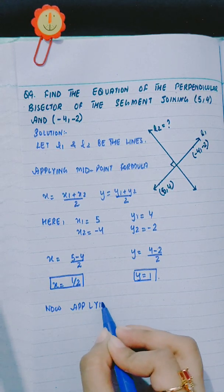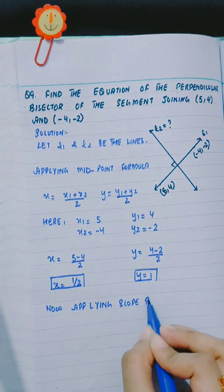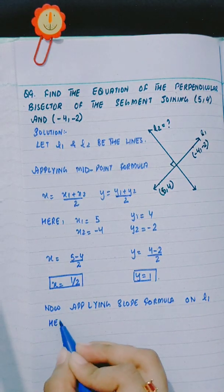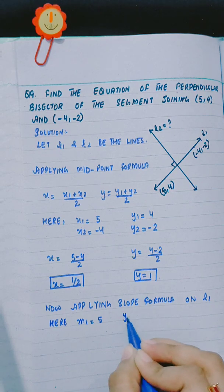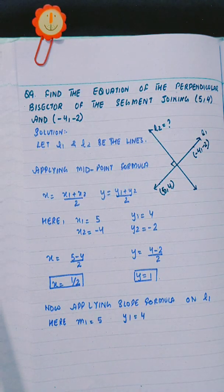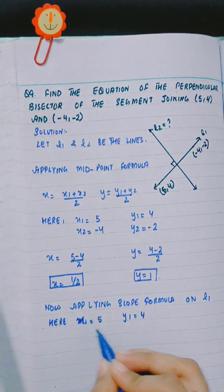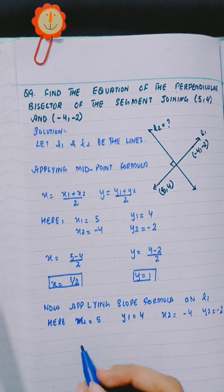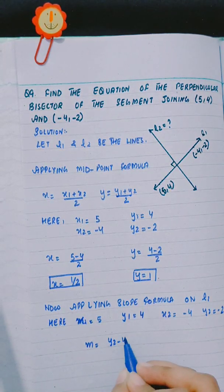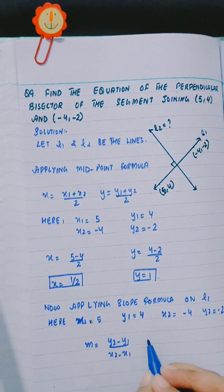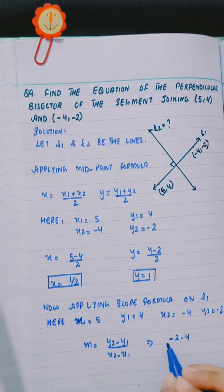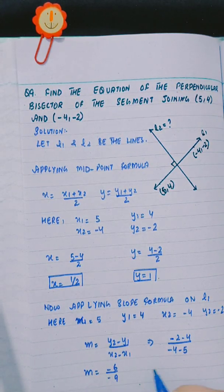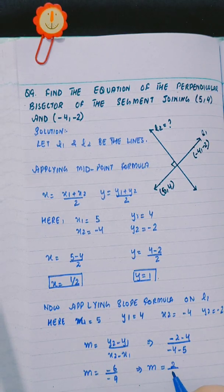Now, applying the slope formula on L1. Here X1 is equal to 5, Y1 is equal to 4, X2 is minus 4, and Y2 is minus 2. So M1 is equal to Y2 minus Y1 divided by X2 minus X1, which is minus 2 minus 4 divided by minus 4 minus 5, giving minus 6 divided by minus 9, and M1 equals 2 by 3.